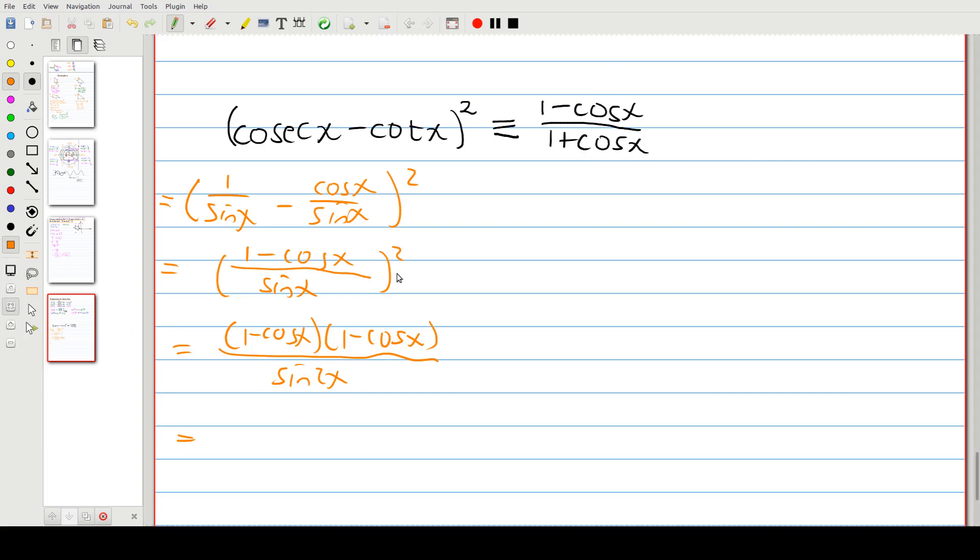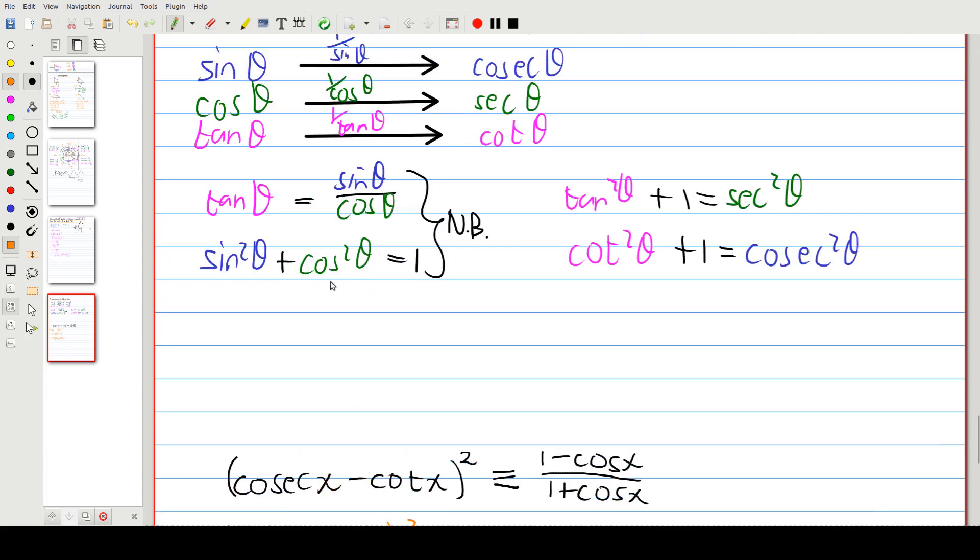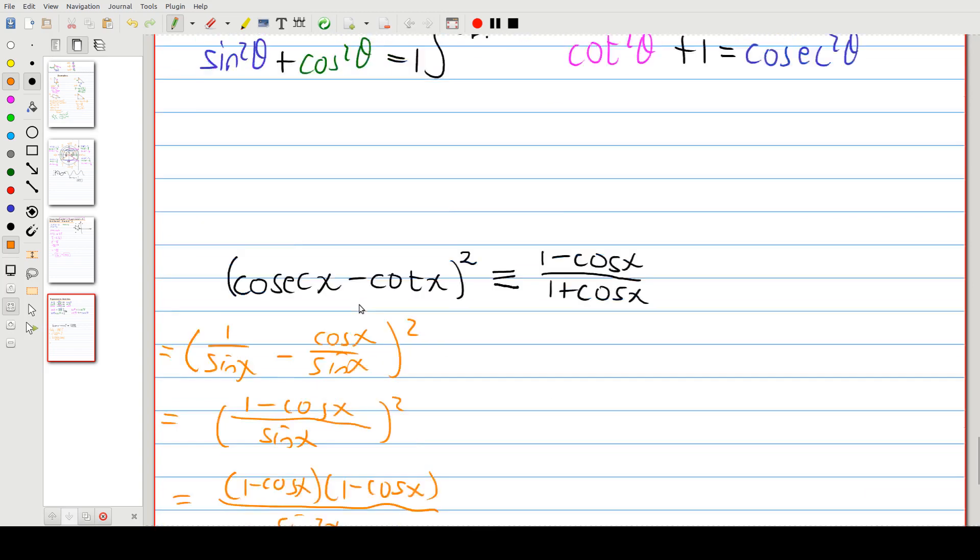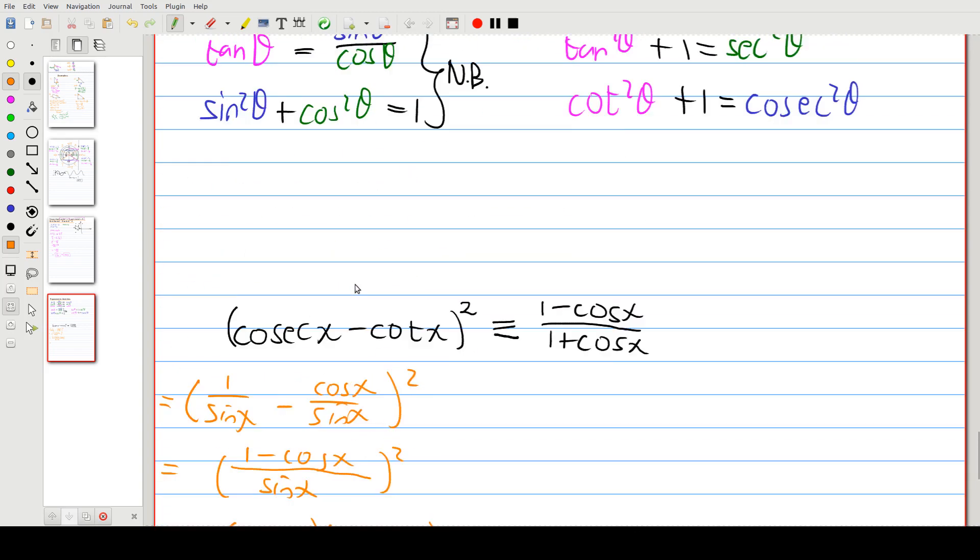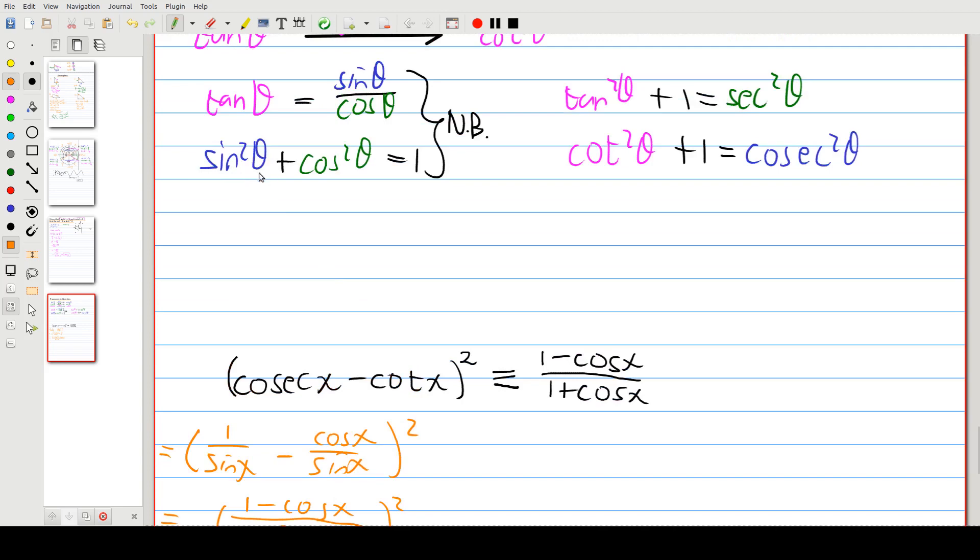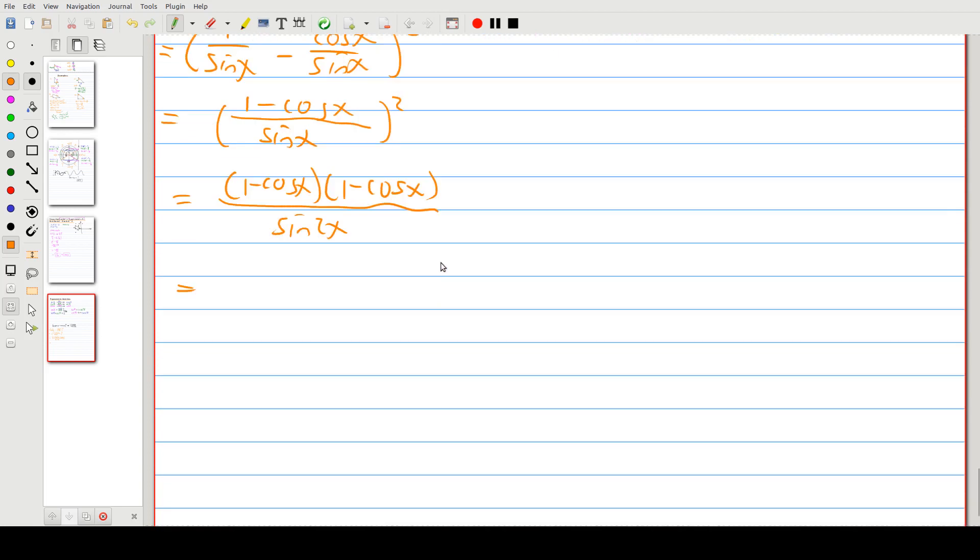Now this is where our second identity comes in. We know that sine squared plus cos squared is one. So we can rearrange this formula. If we get sine squared by itself, then we have sine squared equals one minus cos squared, if we take the cos squared over.